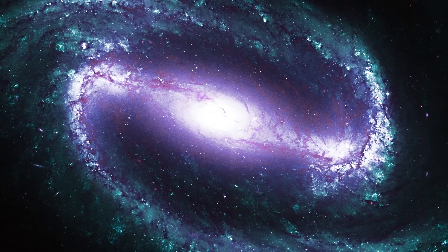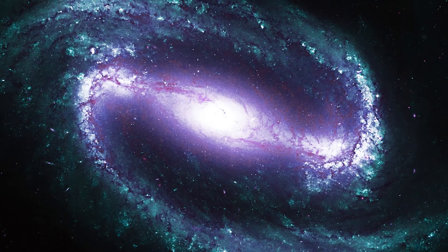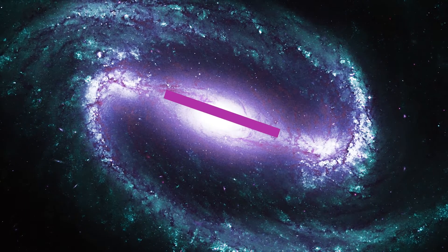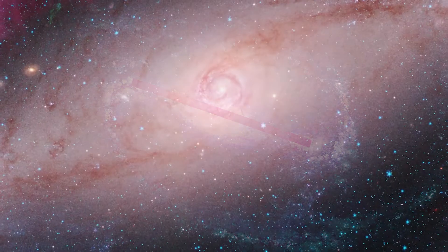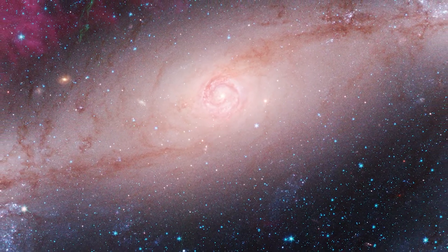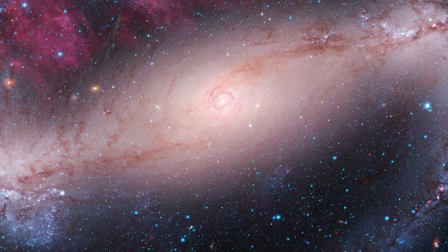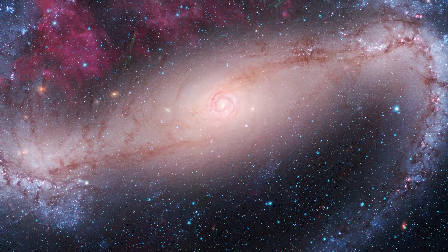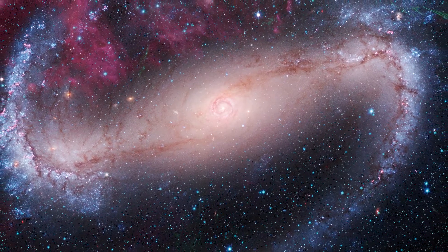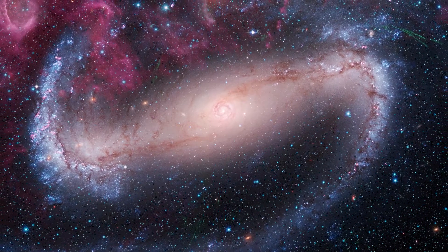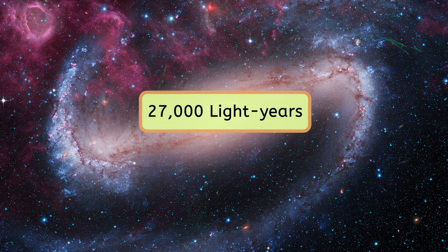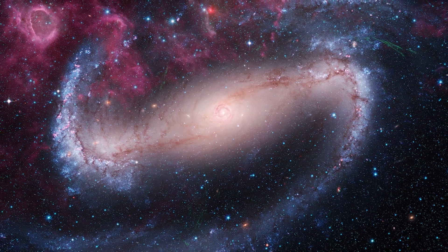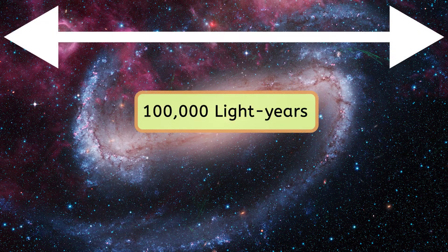Barred spiral galaxies share most of their characteristics with normal spiral galaxies, but the difference is clear! Barred spiral galaxies have a huge bar-like structure running through their center. This bar is composed of stars, gas, and dust, and usually extends out to the ends of the spiral arms. Our own Milky Way galaxy is a spiral galaxy, and it actually wasn't until recently that astronomers discovered it was a barred spiral instead of a normal spiral. Astronomers estimate the bar structure in the center of our galaxy is about 27,000 light-years across — and that's not even close to how big the Milky Way is in full. Astronomers have estimated that our galaxy has a diameter of about 100,000 light-years.